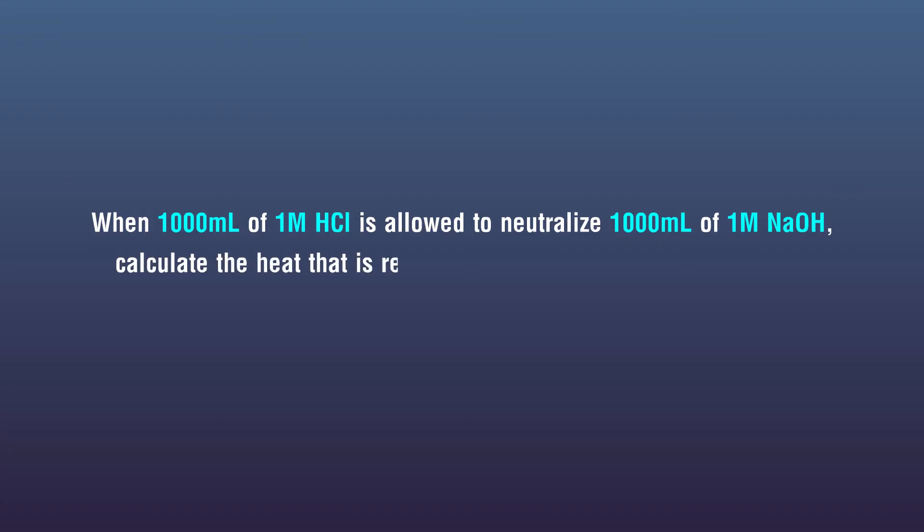When 1000 milliliters of 1 molar HCl is allowed to neutralize 1000 milliliters of 1 molar NaOH, calculate the heat that is released. This amount would be 10 times greater than what was achieved.